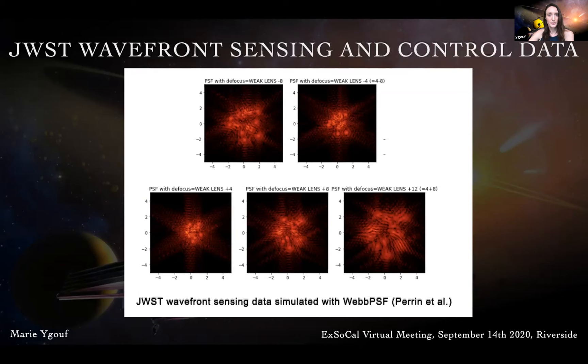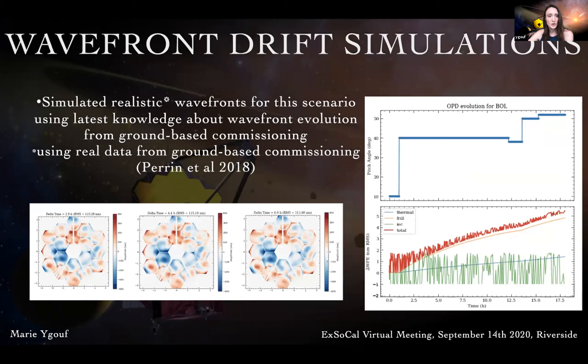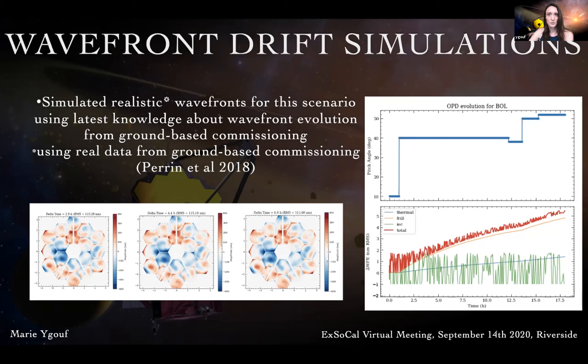We simulated the evolution of the wavefront for this scenario using the latest knowledge about wavefront evolution from ground-based commissioning. The top panel on the right represents the solar pitch angles for our targets, while the bottom panel represents the total evolution of the wavefront drift in red, which is a combination of three different terms: thermal, frill, and instrument electronics. Interestingly, the wavefront varies quite a bit — by four to five nanometers RMS — from the beginning to the end of the observation. On the left you can see some examples of simulated wavefront maps at different times: 2.9, 4.4, and 6.6 hours after the beginning of the observation.